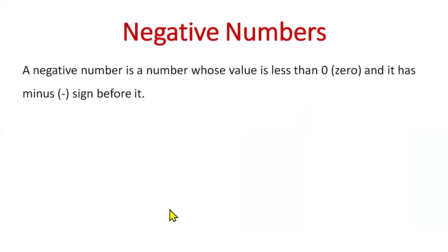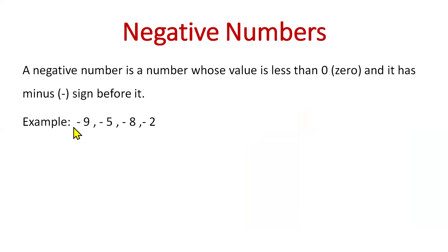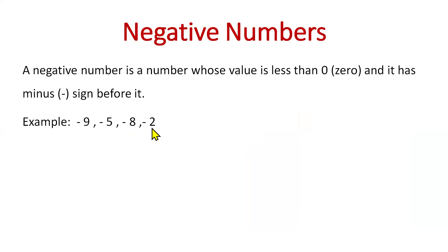A negative number is a number whose value is less than zero and it has a minus sign before it. For example, minus 9, minus 5, minus 8, minus 2 — all these numbers are less than zero and they have a minus sign before them, so these are the negative numbers.